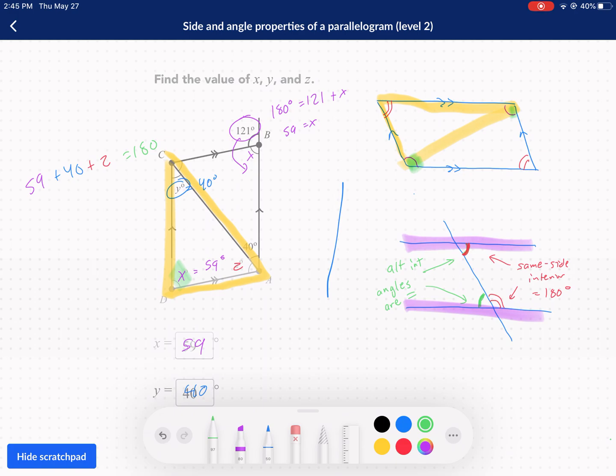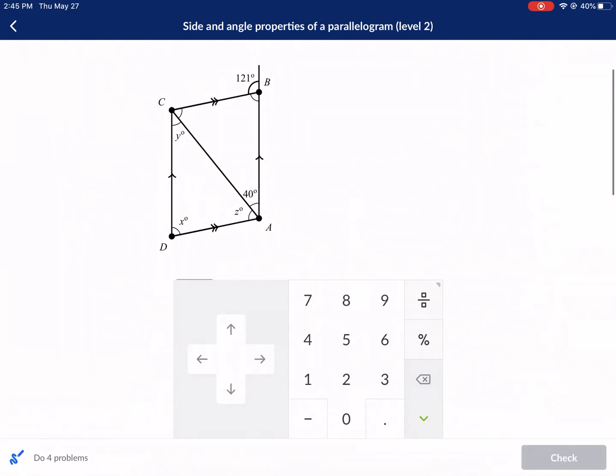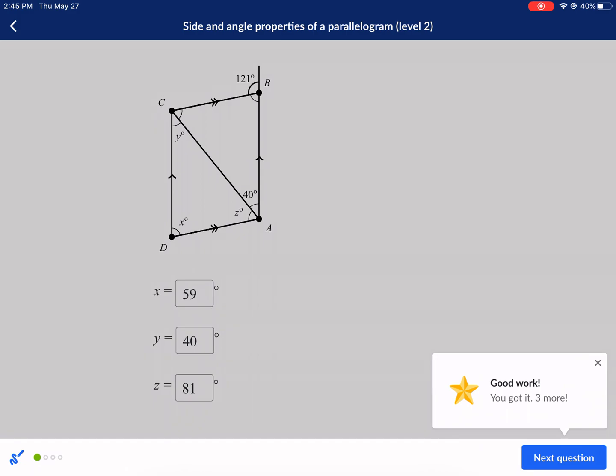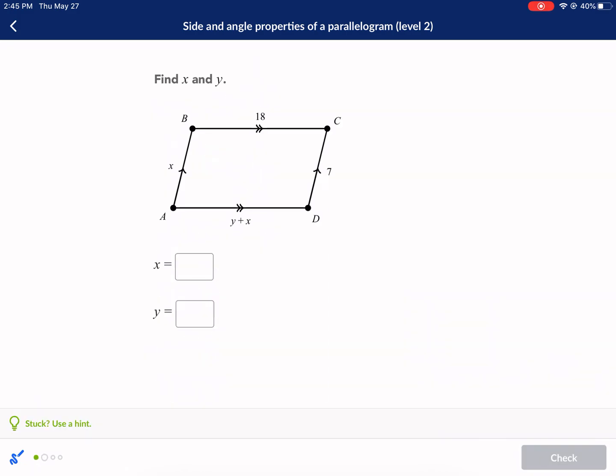Therefore, we just need to solve for z. So we're going to do 59 plus 40. That gives us 99. So 99 plus z equals 180. And then we're going to subtract that from both sides to solve for z. So we subtract that from both sides and we should get 81. So z equals 81 degrees. And that's probably the best, fastest way to solve this particular question is like that, how I just showed. But you have to know those properties of the parallelogram first in order to do it.